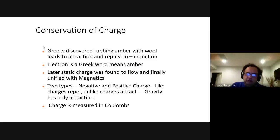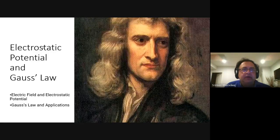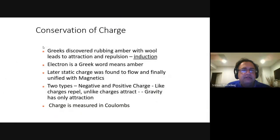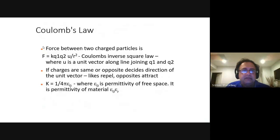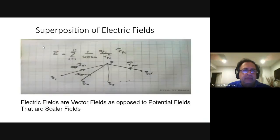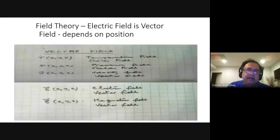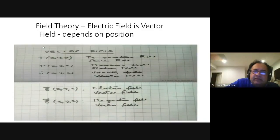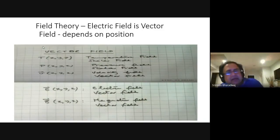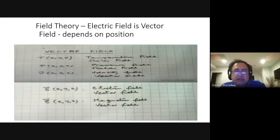Now I am going into the actual material. We are looking at electrostatic potential, then I will switch to capacitance. Last week we covered Coulomb's law and electric field. The electric field is a vector field. From field we went to a scalar field — temperature and pressure are scalar fields. Similarly, electrostatic potential is also a scalar field.